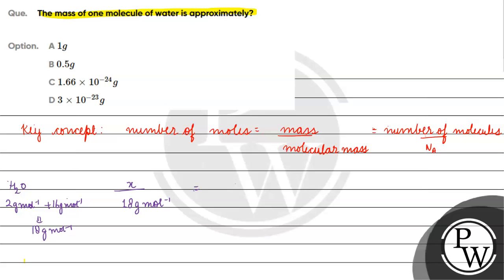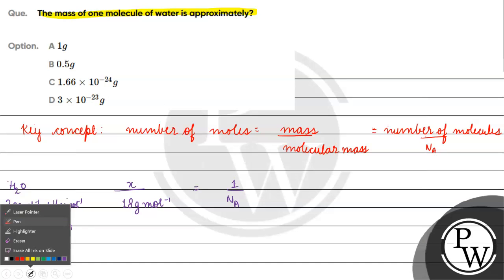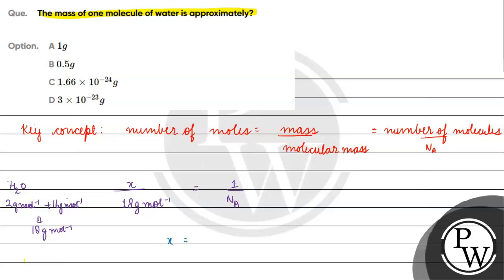It is equal to number of molecules. We have to take 1, and what would be N_A? Avogadro's number. So what do we have to find out? The value of x. x is basically equal to 18 gram per mole by Avogadro's number. How much will it be? 6.022 × 10²³ mole inverse.